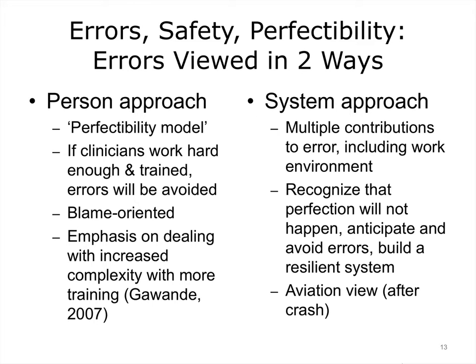It is important to realize that errors can be viewed in two ways. One approach focuses on the individual person and tends to assign blame, in the belief that if clinicians are well trained and work hard enough, errors can be avoided and perfection can result. The increased complexity in healthcare has been met with the belief that increasingly sophisticated and lengthy training will solve the problem. The system approach, on the other hand, examines multiple contributions to error — not just from individuals, but the entire work environment. It recognizes that perfection will not happen, but tries to anticipate and avoid errors and build a resilient system which can detect and recover from potential errors rapidly.